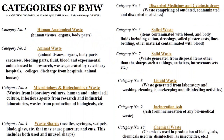There are ten categories of biomedical waste. Category 1 is human anatomical waste — human tissues, organs, and body parts. Category 2 is animal waste. Category 3 is microbiology and biotechnological waste — waste from laboratory cultures, human and animal cell cultures from research work. Category 4 is waste sharps — needles, syringes, scalpel blades, and glass.